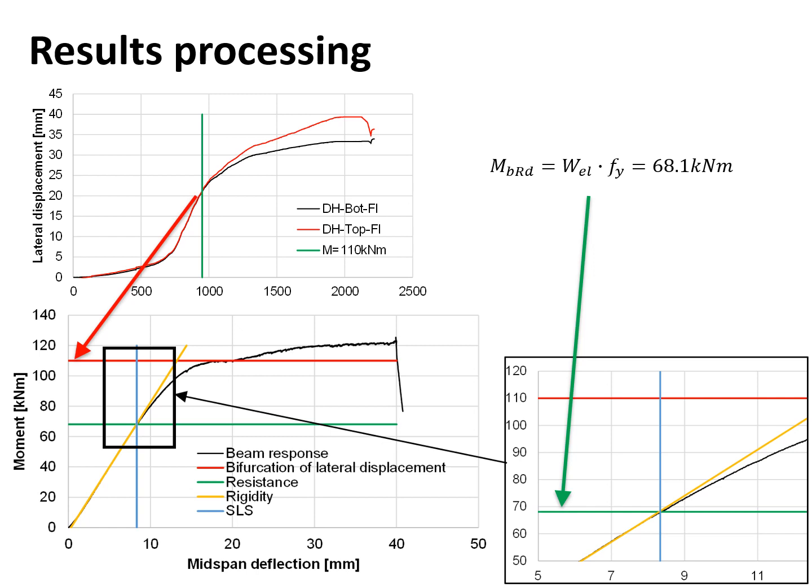Therefore, the yield limit of the material and plastic strains should develop in the cross section of the beam.